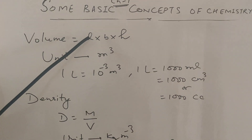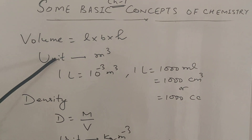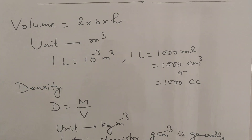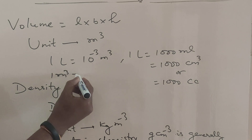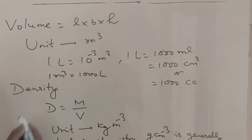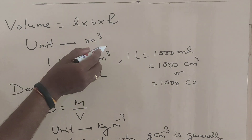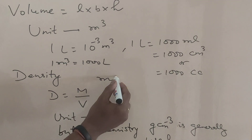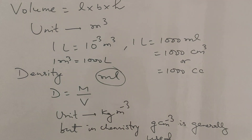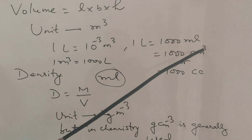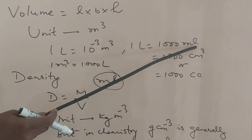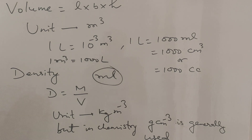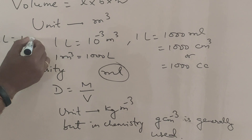Volume is the product of length × breadth × height, and its unit is meter cube. 1 liter equals 10⁻³ meter cube, meaning 1 meter cube equals 1000 liters. Generally, volume is expressed in smaller units: 1 liter equals 1000 milliliters, 1 milliliter equals 1 cm³ (cubic centimeter), and 1 liter also equals 1 decimeter cube.